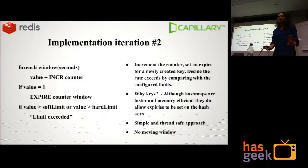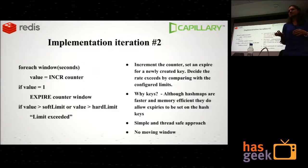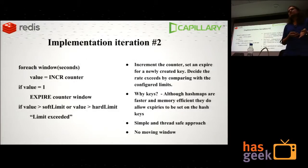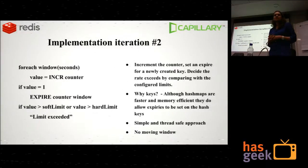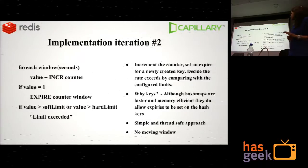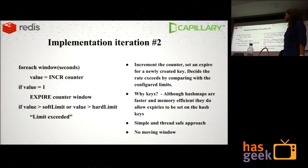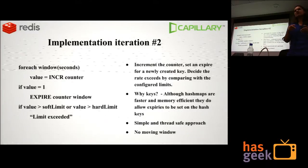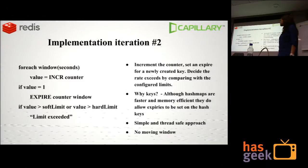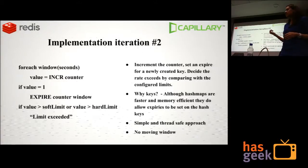In our next iteration we simply used a key. Each time a new call came in, we increment that key. If it was the first time the key entered Redis, we set an expire with a TTL equivalent to the window time. If the current value has exceeded either of the limits, the rate has exceeded. Memory usage dropped a lot and it is thread-safe because all operations are atomic. The trade-off is there is no moving window — the earlier approach handled edge cases at window boundaries, but performance-wise this approach was very good.